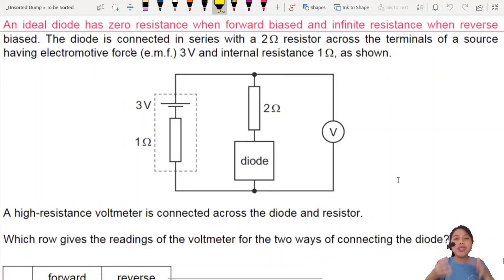This question really tests your understanding of how circuits work and how diodes work. An ideal diode, let's see, has what? Zero resistance when forward biased and infinite resistance when reverse biased. What does that mean? We'll look at that later.